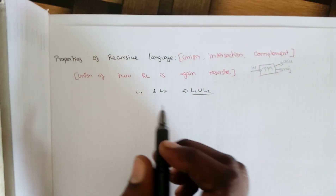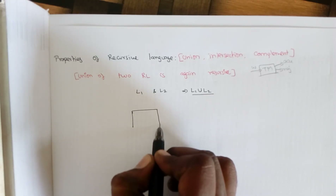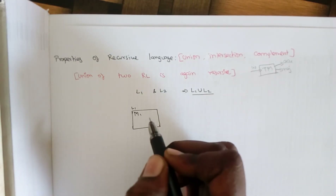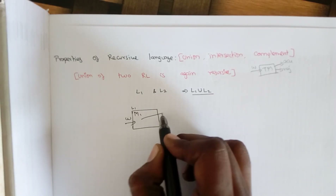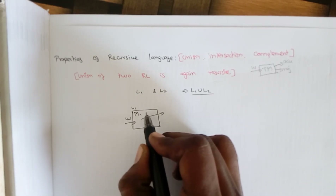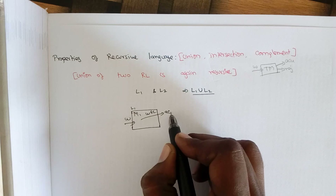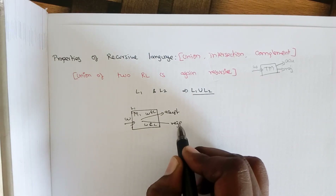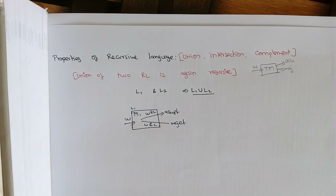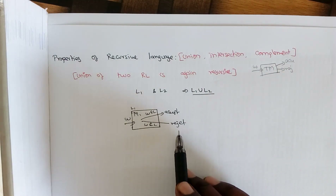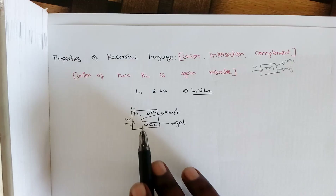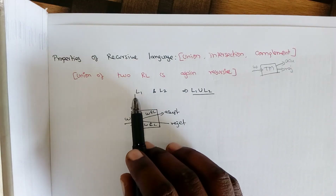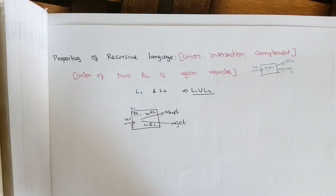For this, we construct a Turing machine M1 for L1. When we give an input W, if the input belongs to L1 the machine accepts; if the input doesn't belong to the language the machine rejects — because it is a recursive language, acceptance and rejections are properly defined. The purpose is: if the input belongs to either L1 or L2, the input should be accepted.